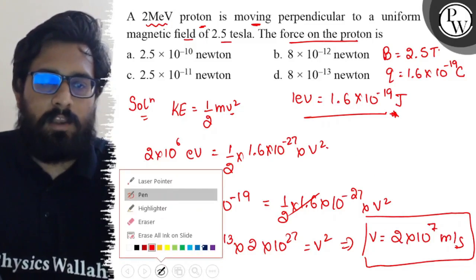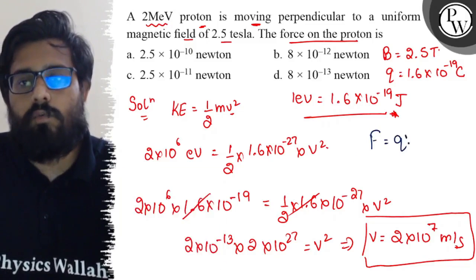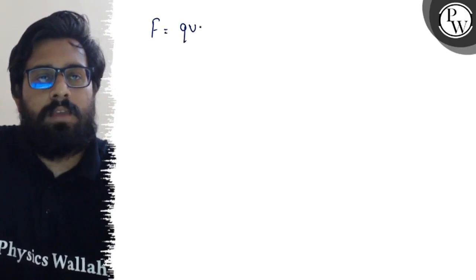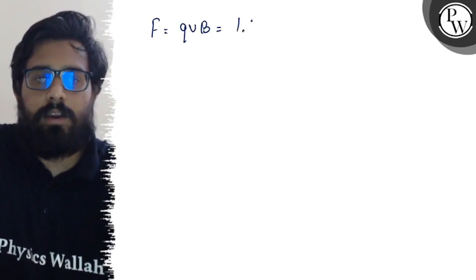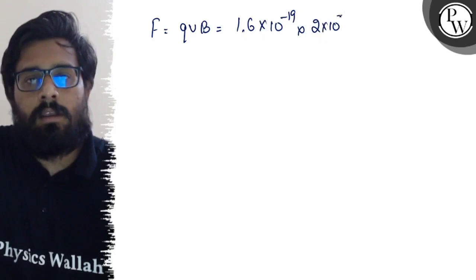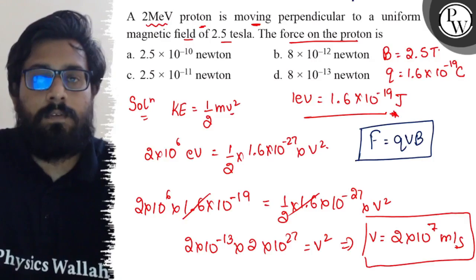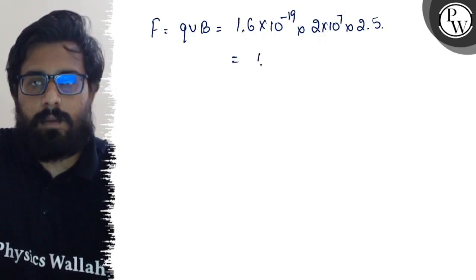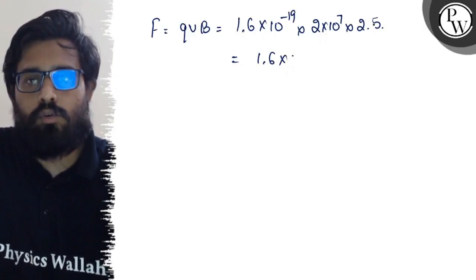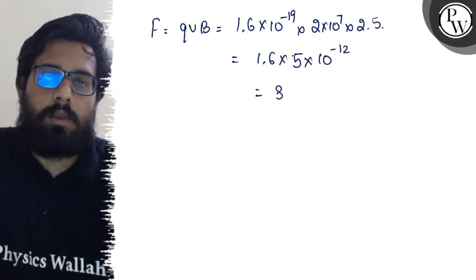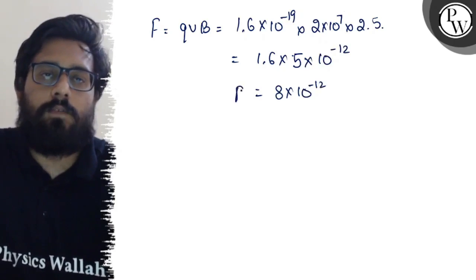Now you can put this value of velocity in the formula F equals QVB, since this is the force acting on the charged particle. So let us solve this on the next page. The force is QVB: the charge is 1.6 into 10 to the power minus 19, the velocity is 2 into 10 to the power 7, and B is 2.5 tesla. Once you solve this, you get 1.6 into 2 into 2.5, and the powers of 10 come out to 10 to the power minus 12. So the answer is 8 into 10 to the power minus 12 newton.